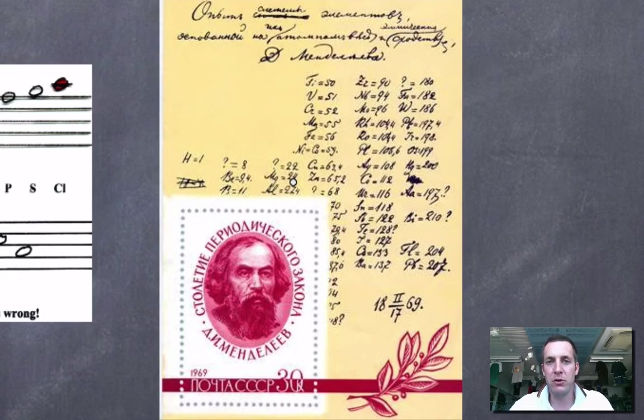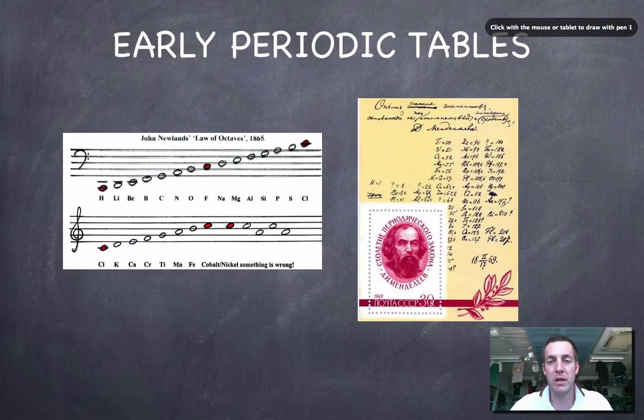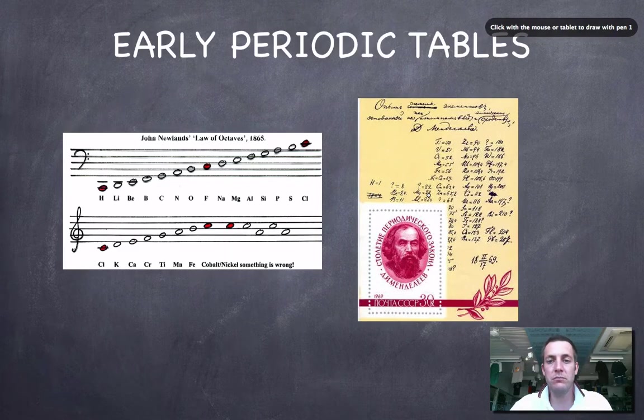So the power of Mendeleev's table was not only the fact that he'd found a nice way of arranging atoms, but also that there was some predictive power. It allowed us to think, maybe there are other elements we haven't discovered yet, and here's what they might behave like. And when that was proved right, it suggested that Mendeleev had really hit on something.